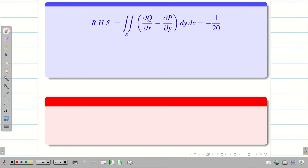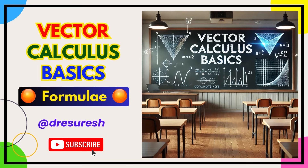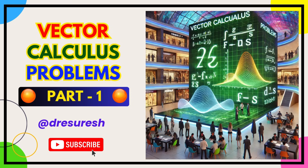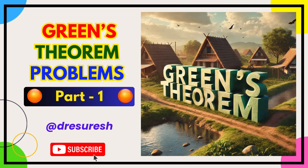RHS is minus 1/20 and LHS is also minus 1/20. Hence Green's theorem is verified. Hope you understand, students. Thanks for watching — hope you found this video helpful. Subscribe to our channel and share with your friends. See you in the next video.